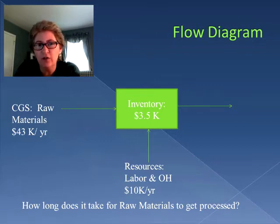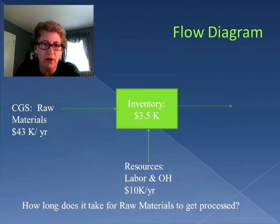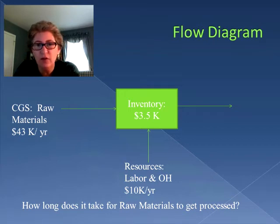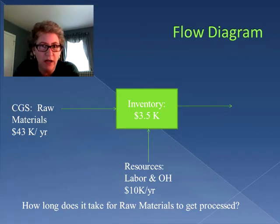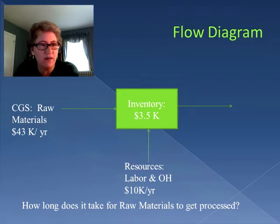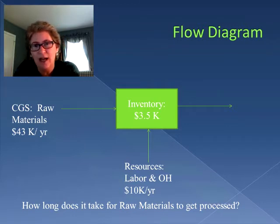Here our cost of goods sold entering into the process for just raw materials is costing us forty-three thousand dollars a year. So that would be our throughput rate if we're just tracking raw material dollars. The inventory is how much raw material is left at the end of the year, and that turned out to be three point five thousand dollars. We're really going to be concentrating on our throughput rate and our inventory because we want to find out how long it takes for a raw material dollar to get through the process.